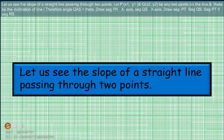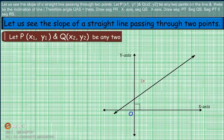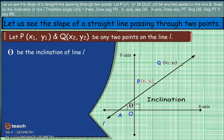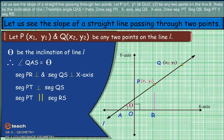Let us see the slope of a straight line passing through two points. Let P(x1, y1) and Q(x2, y2) be any two points on line L, and let theta be the inclination of line L. Draw segment PR perpendicular to the x-axis, segment QS perpendicular to the x-axis, and segment PT perpendicular to segment QS. Therefore, segment PT is parallel to segment RS.